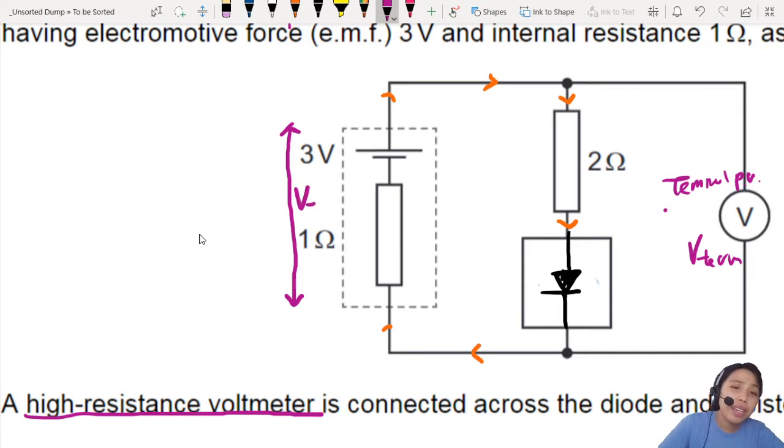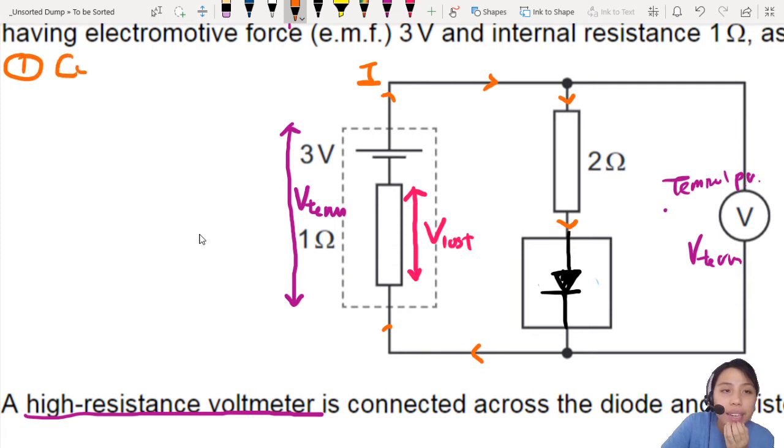But the question is, how do you find V-term? If I know how much energy I lost in the battery, loss volts, then I can use my EMF minus loss volts to find the answer. But I don't know what's my loss volts. To find loss volts, I need to know what the current in the circuit is. So I need to find current first. So let's do the first step. Find current.